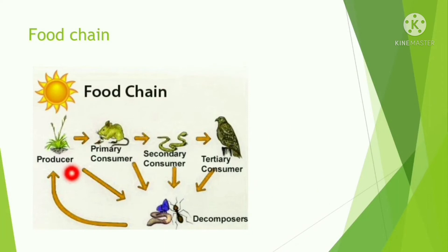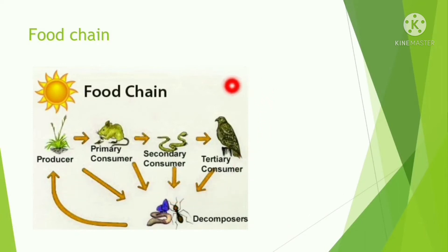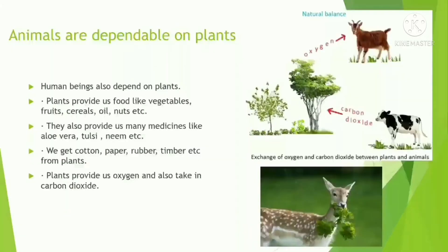Decomposers eat the dead and decaying parts of all consumers, and plants absorb the nutrients and minerals produced by the decomposers. So it is clear that plants and animals are dependable on each other. Let us find out how animals are dependable on plants.